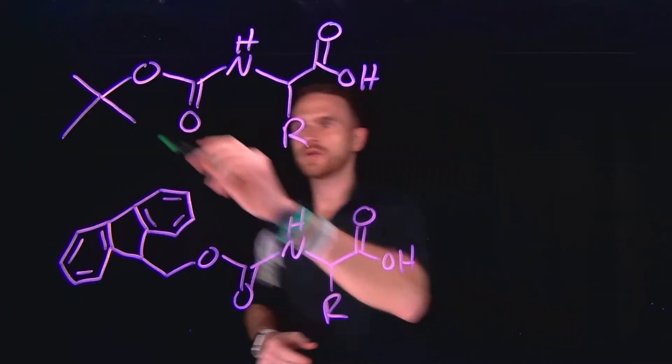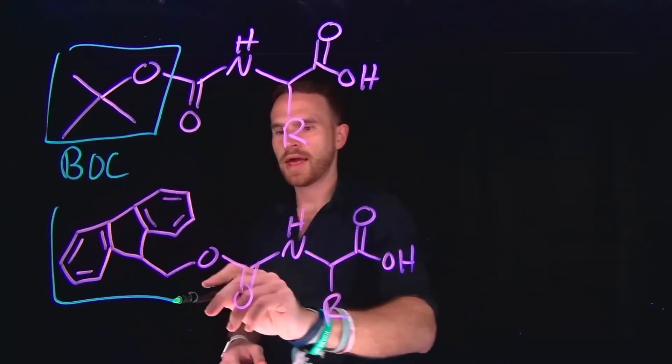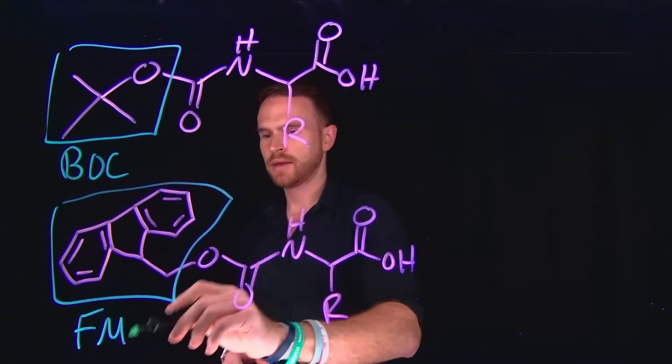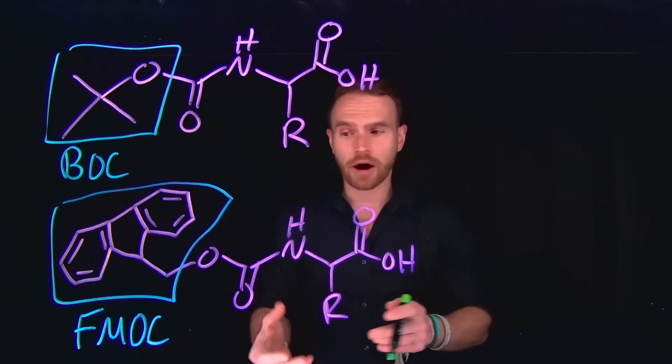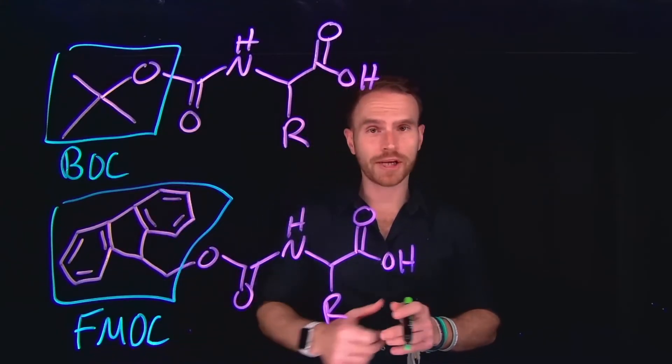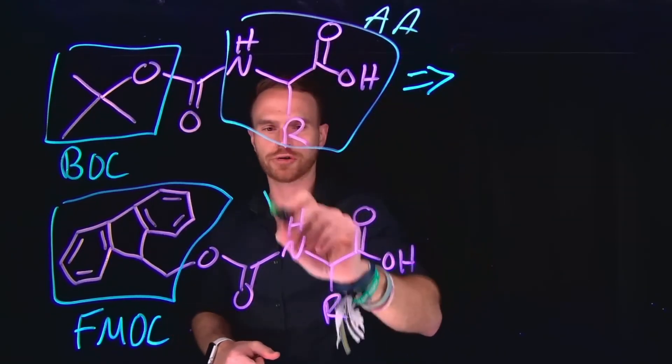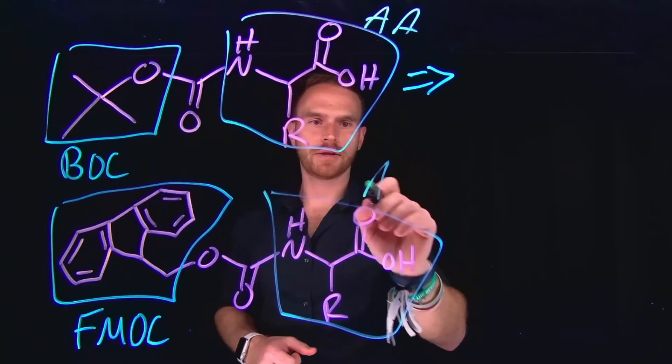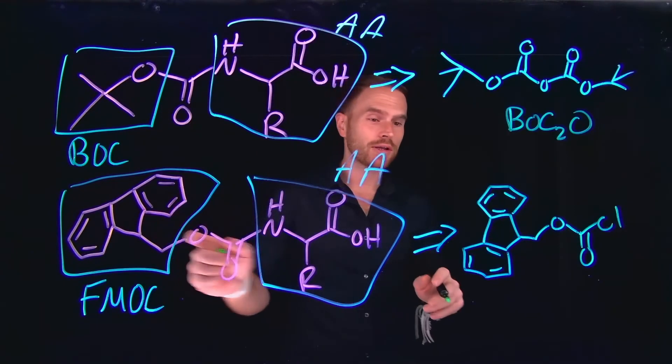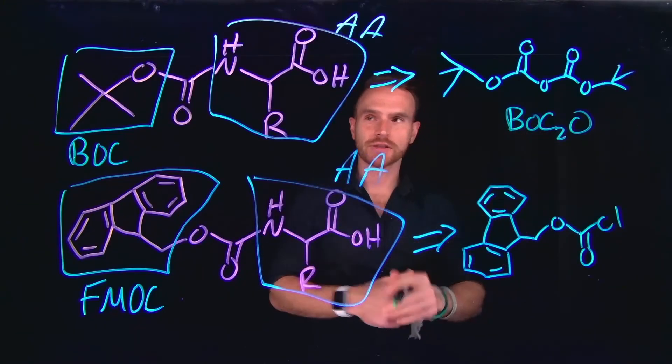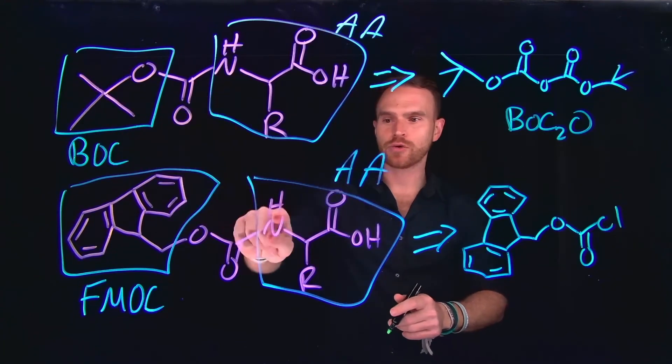The two most commonly used protecting groups are going to be BOC, or BOC, or FMOC. BOC stands for tert-butoxy carbonyl, and FMOC stands for fluorenyl methoxycarbonyl. Notice that this portion is just our amino acid structure, which has been modified by some special starting material. Both of those starting materials are drawn here. Importantly, when you add both of these reagents to an amino acid, they form an amide bond, allowing us to protect the amine group on each side.